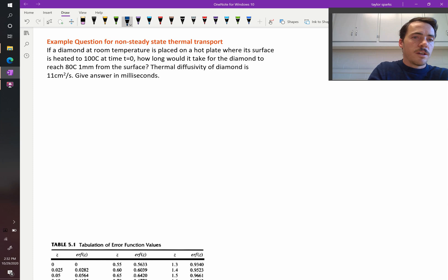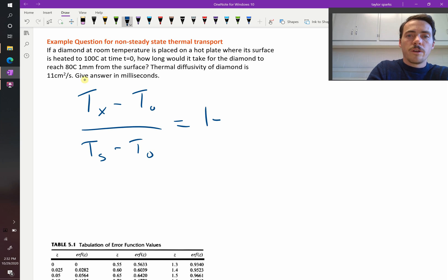It says the following: the temperature at some position X minus your initial temperature divided by the temperature at the surface minus your initial temperature is going to be equal to one minus the error function of the position where you're making this measurement divided by two times the square root of alpha T.